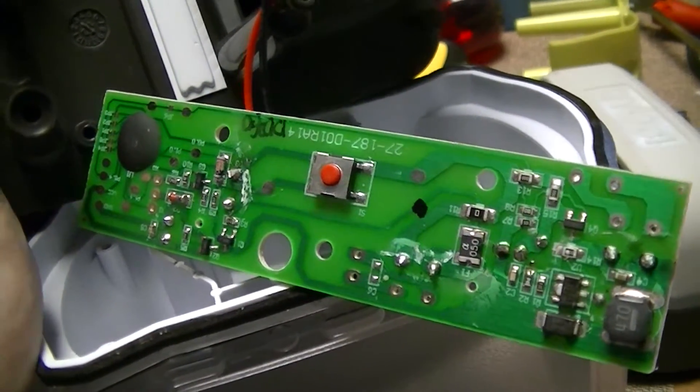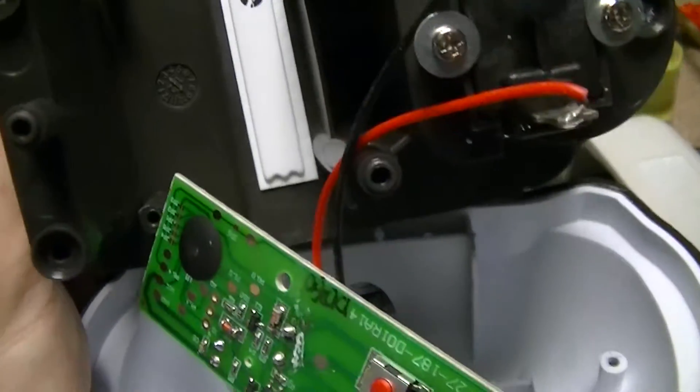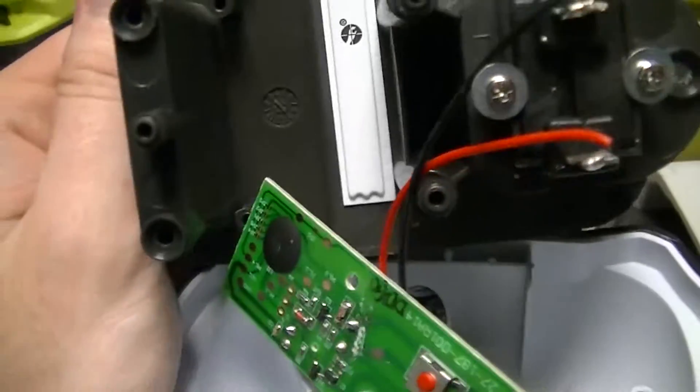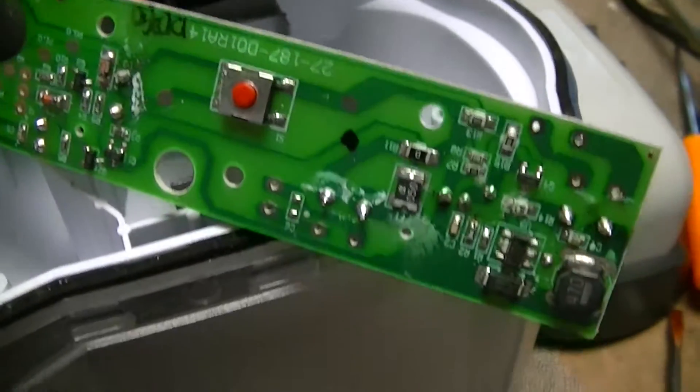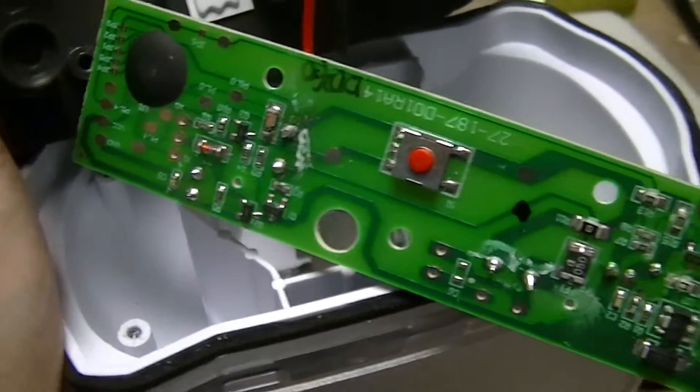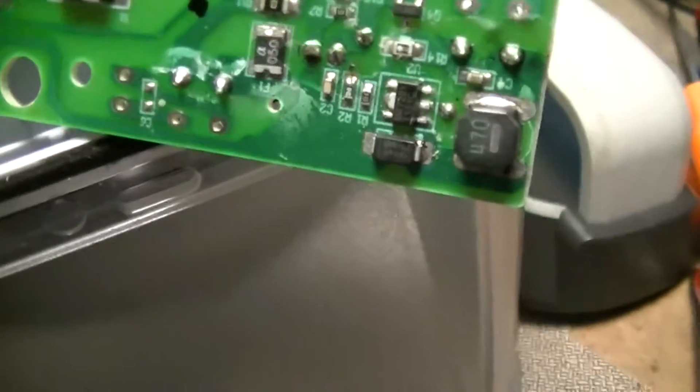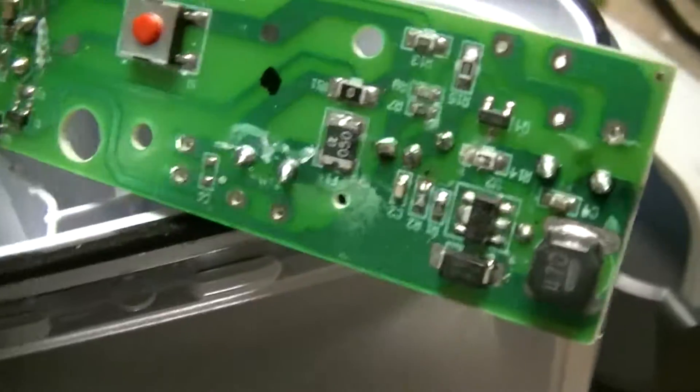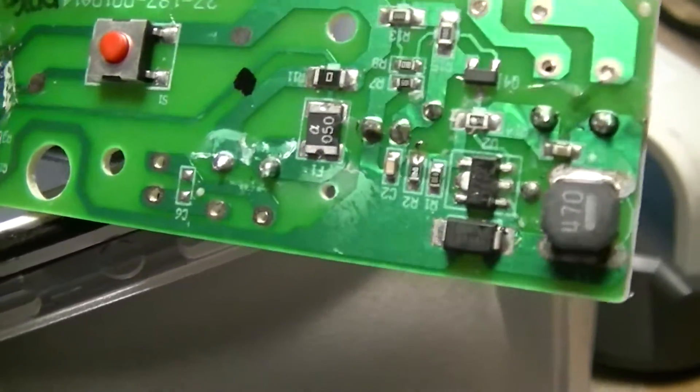This is the guts of a Ryobi P780 One Plus Tool System LED Lantern, and fairly simple inside it. That surface mount package I don't recognize, but that's a MT7201, that's probably just a monolithic constant current buck converter driver for LED lights.